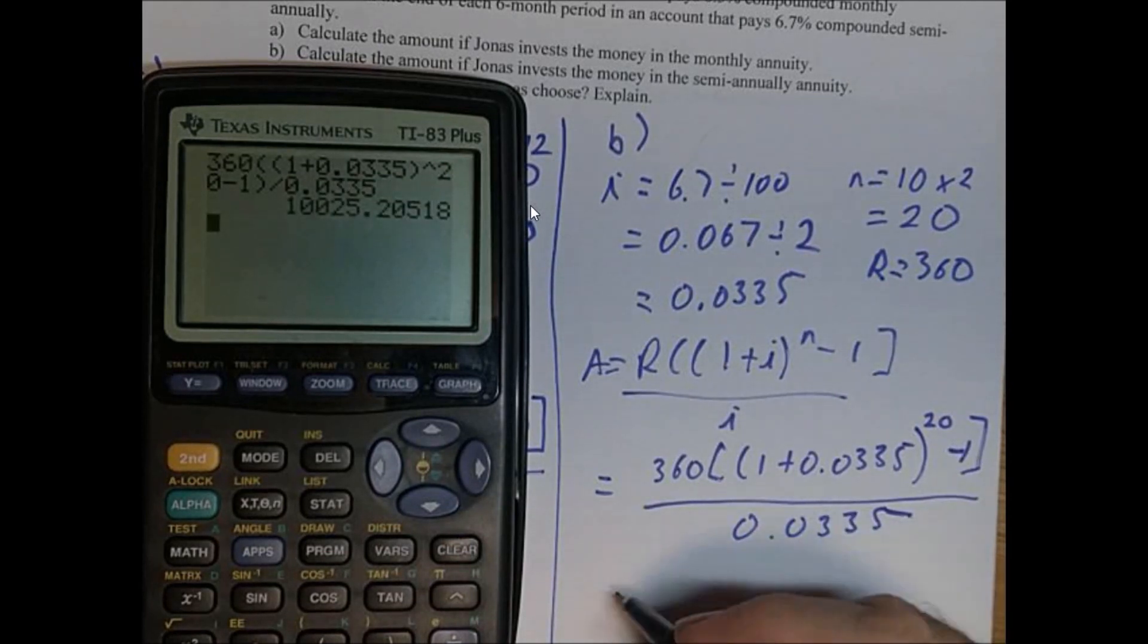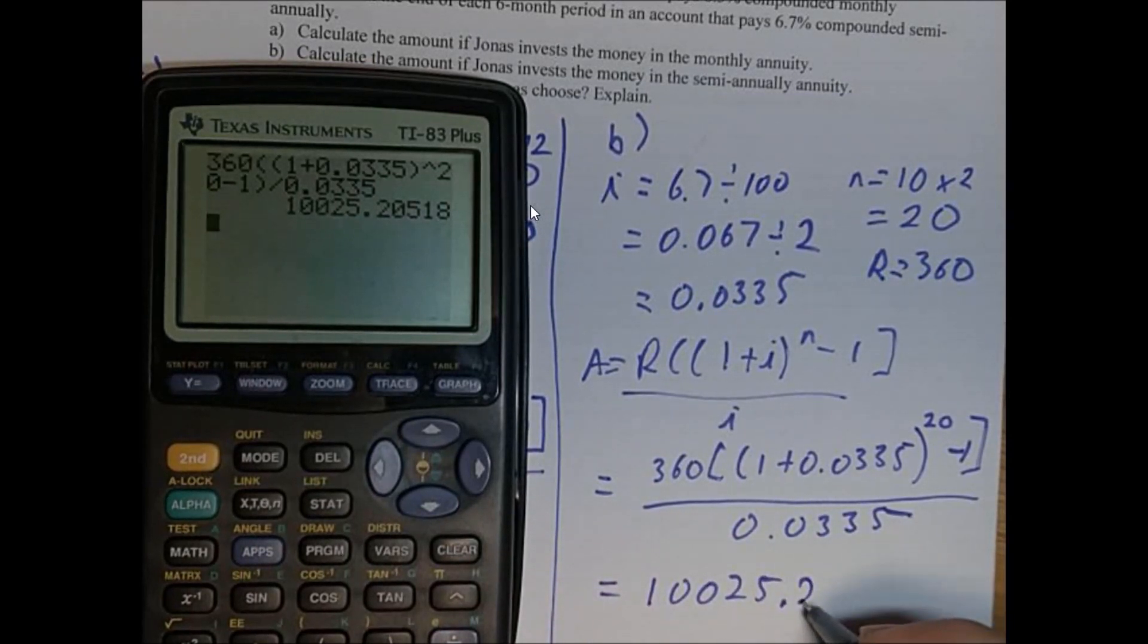Divided by 0.0335. And we get 10,025 and 21 cents.